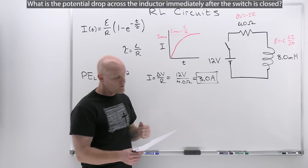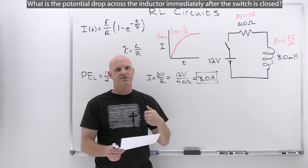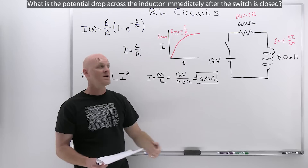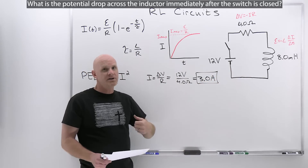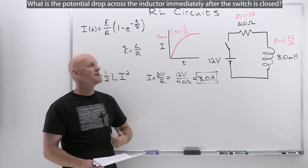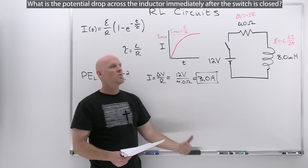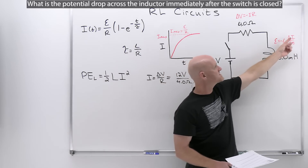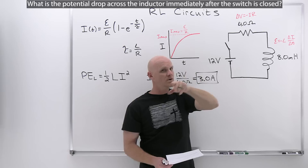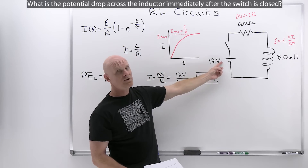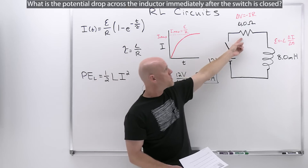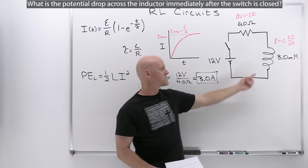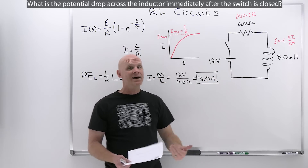Part 3: what is the potential drop across the inductor immediately after the switch is closed? Right when the switch closes, the rate of change of current is at its greatest, so the inductor has its highest potential drop. Using Kirchhoff's loop rule: there's a 12-volt increase from the EMF source, and with zero drop across the resistor at that instant, all 12 volts must be dropped across the inductor. So the potential difference across the inductor is −12 volts immediately after closing.